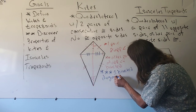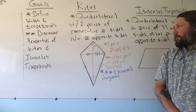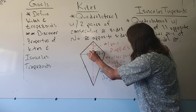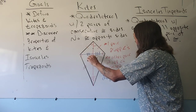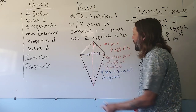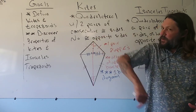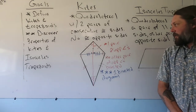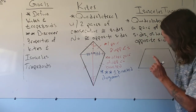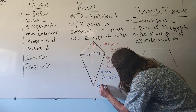Our last property of the kite — again, all of these come from CPCTC. I have this little triangle that's the same as this little triangle, and I have a straight line, so this angle and this angle have to add up to 180 degrees. Since both angles are in the same position of identical triangles, both angles have to be the same. Two identical angles that add to 180 degrees must both be 90 degrees. So the last property of a kite is that the diagonals are perpendicular.